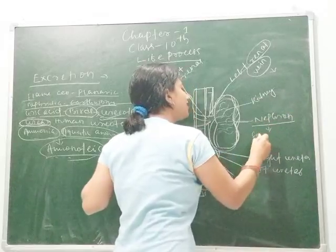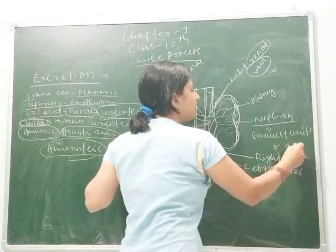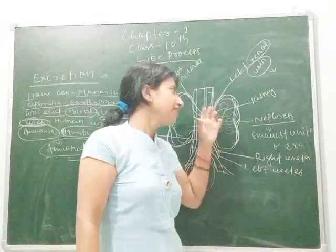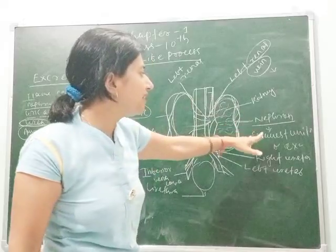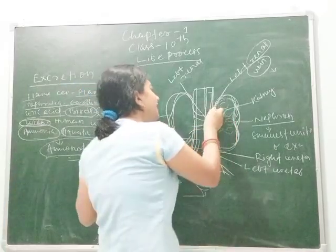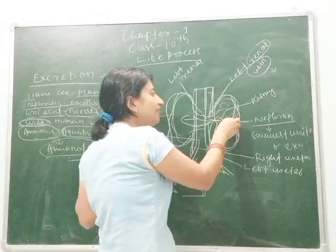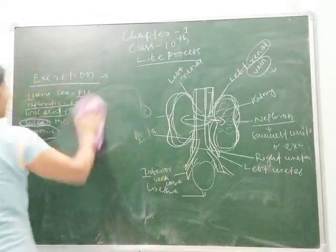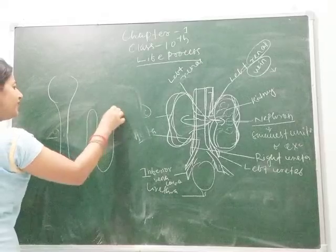The nephron is the smallest unit of excretion. Filtration occurs through nephrons present in the kidney. Both kidneys contain millions of nephrons. When blood enters the kidney it goes to the nephrons, where filtration occurs. Let's look at how a nephron filters blood — you can see the structure of a nephron in the diagram.